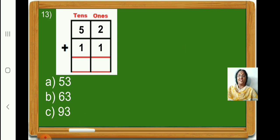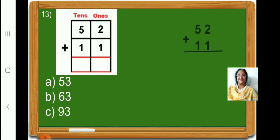Now, here, children, we have to add 52 plus 11. Children, in your book, write 52 plus 11. First, let us add the numbers in the 1's place. 2 plus 1 is 3. Now, let us add the numbers in the 10's place and write it under 10's. 5 plus 1 is 6. Children, 52 plus 11 is equal to 63. So, put a tick on option B, 63.